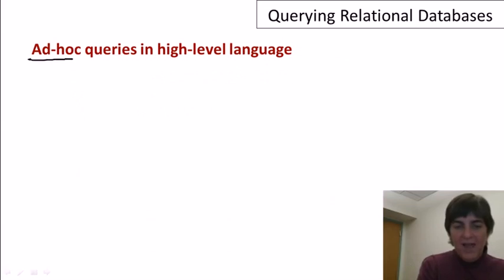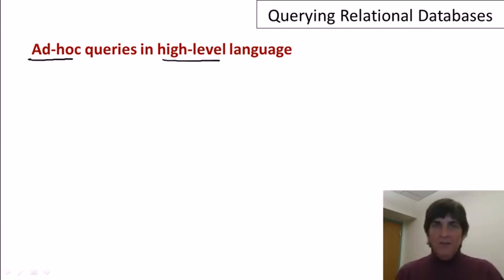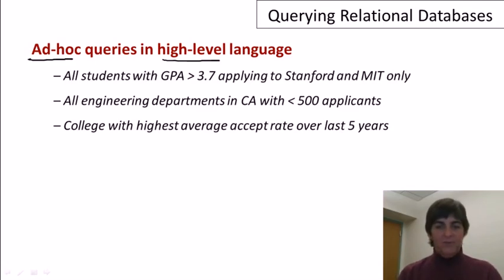Relational databases support ad hoc queries in high-level languages. By ad hoc, I mean that you can pose queries that you didn't think of in advance. It's not necessary to write long programs for specific queries. Rather, the language can be used to pose a query as you think about what you want to ask. And as mentioned in previous videos, the languages supported by relational systems are high-level, meaning you can write in a fairly compact fashion, rather complicated queries and you don't have to write the algorithms that get the data out of the database.